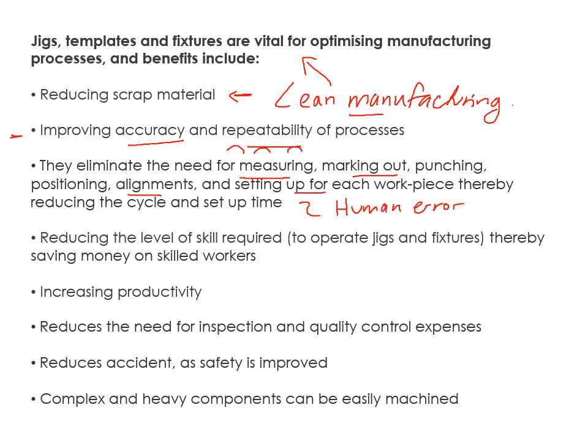They also reduce setup time. Normally when drilling a hole in a workshop, you measure it, mark it, use a centre punch, set up the drill, and align it — which takes a long time. With a jig, you can do that much more quickly. Production aids reduce the level of skill required, saving money on skilled workers, and further remove human error. Increased productivity means you can make more products because the process is faster.